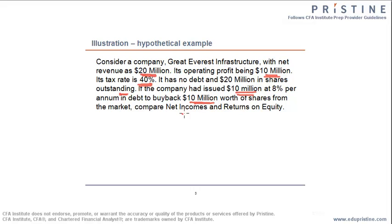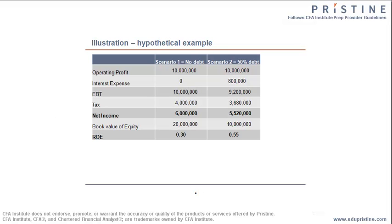In these two scenarios, let us compare the net income and return on equity. In scenario one, when there is no debt, the operating profit is 10 million. There is no additional interest expense, therefore the earnings before tax would be 10 million. Once you charge a 40% tax rate on the earnings before tax, you get net income — which is earnings before tax minus tax — as 6 million. The book value of equity is 20 million, and therefore return on equity, which is net income divided by book value of equity, comes to 0.3.